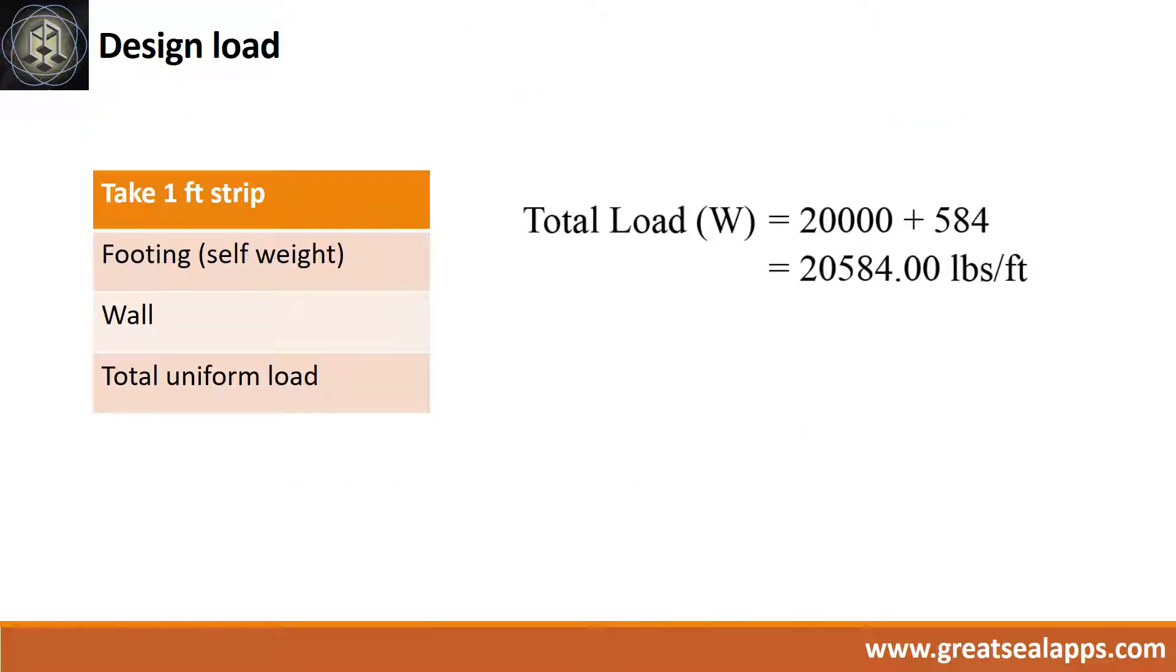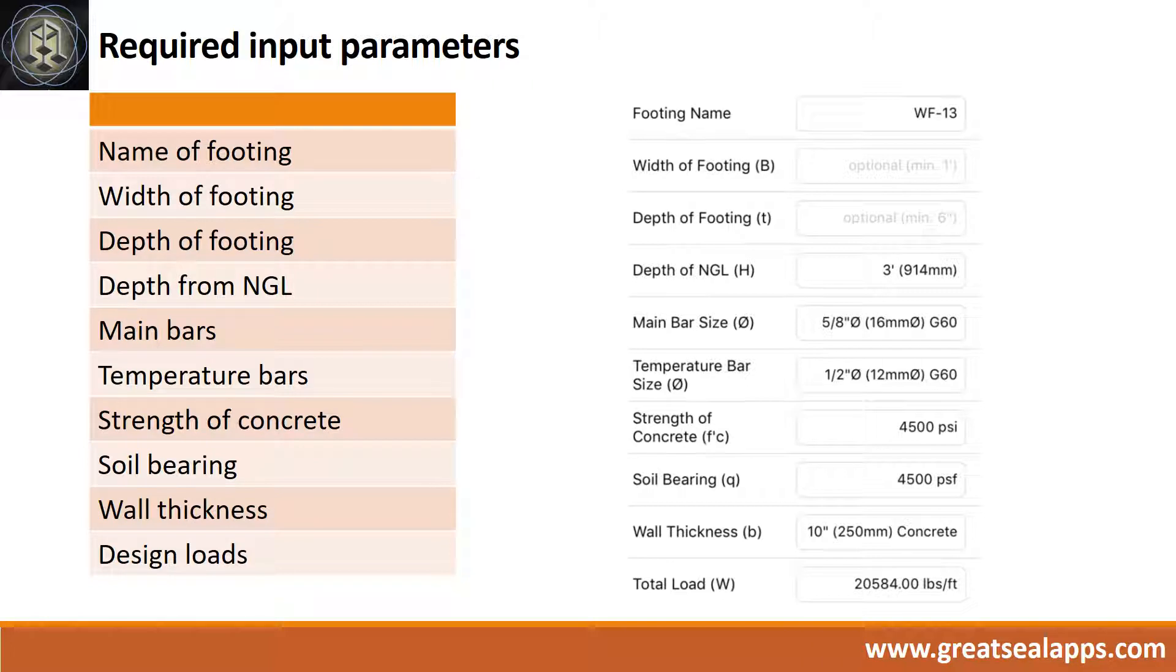The wall footing carries a uniform load of 20,000 pounds per foot. Assume a self-weight of 584 pounds per foot for a total load of 20,584 pounds per foot.